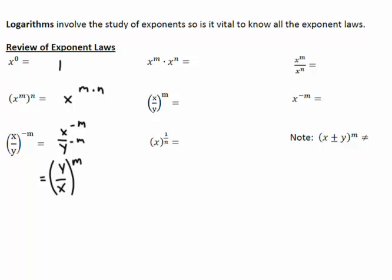Some easier ones here. When the base is the same, we want to add our exponents — x to the m times x to the n is x to the m plus n. The m just goes in to both values. If we have x to the 1 over n, remember we have a rational exponent. That's where we would change it to a radical, and the denominator becomes the root — that would be the nth root of x.